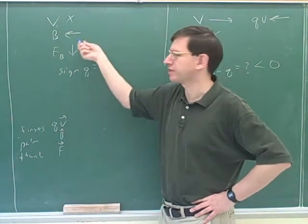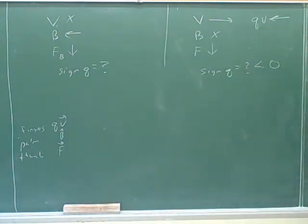So, another example. Let's figure out the sign of q of these vectors. Negative.